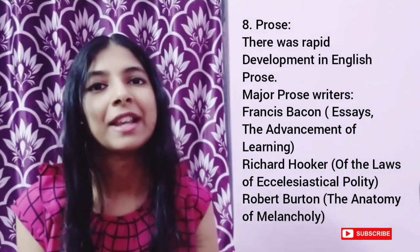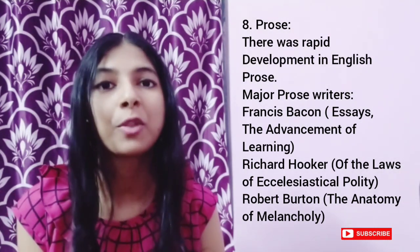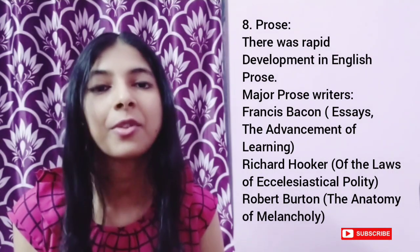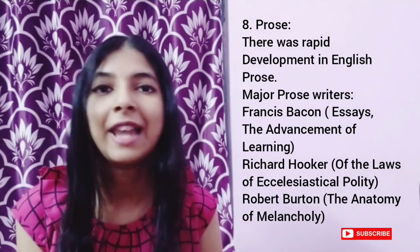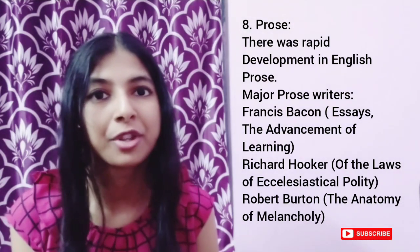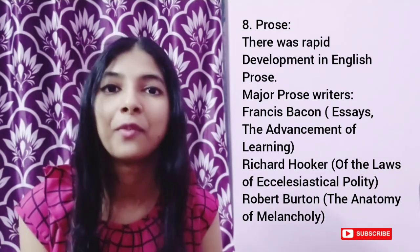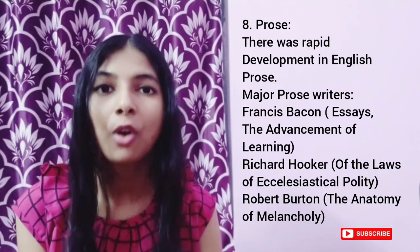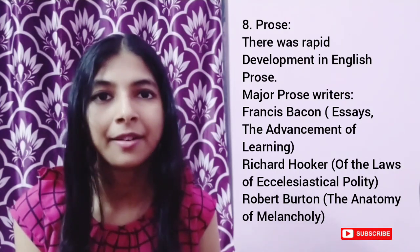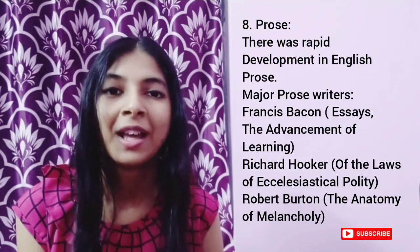Prose: there was a rapid development in English prose. Francis Bacon was one of the major prose writers of the Elizabethan Age. His scientific methods led to the scientific revolution. His major works are his essays and The Advancement of Learning. Other prose writers of the Elizabethan Age are Robert Burton and Richard Hooker.